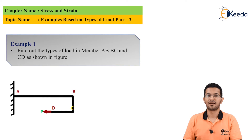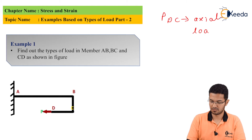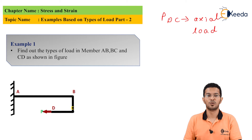In example 1, we have to find out the types of load in members AB, BC and CD as shown in the figure. For member DC, load P is along the longitudinal axis and normal to the surface. Therefore, load P is an axial load. For member BC, load P is parallel to the surface and passing through the longitudinal axis. Hence, load P is transverse shear load.